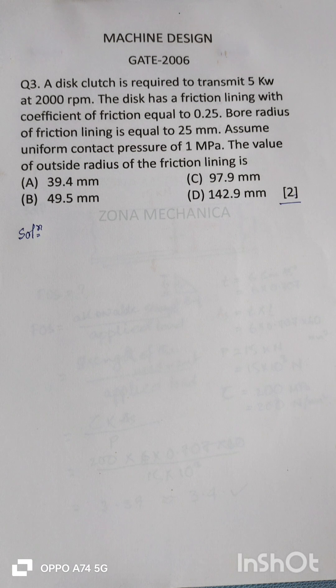A disc clutch is required to transmit 5 kilowatt at 2000 rpm. The disc has a friction lining with coefficient of friction equal to 0.25. Bore radius of friction lining is equal to 25 mm. Assume uniform contact pressure of 1 MPa. The value of outside radius of the friction lining is—there are four options given.